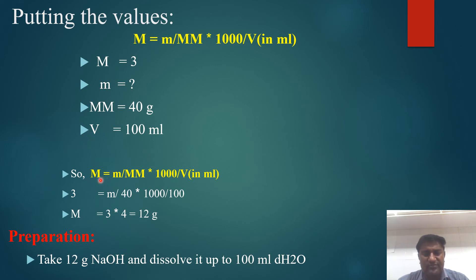Using the formula, putting the values: 3 = (m/40) × (1000/100). Dividing: 3 = m/40 × 10, so 3 × 4 = 12 grams. This is the answer. To prepare the solution, take 12 grams of sodium hydroxide and dissolve it in distilled water up to 100 ml.